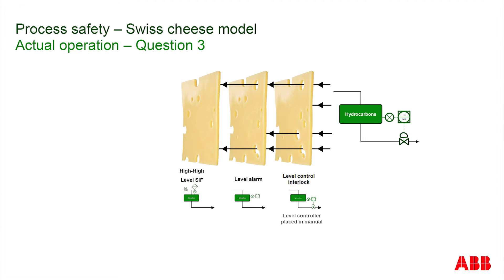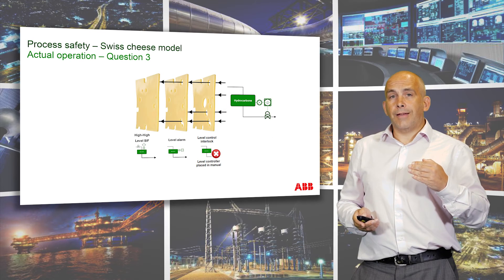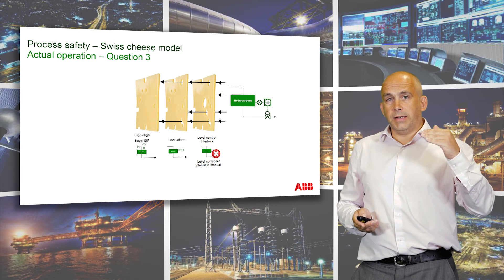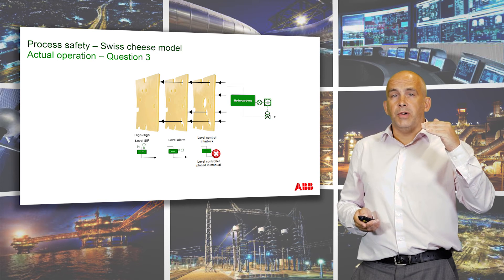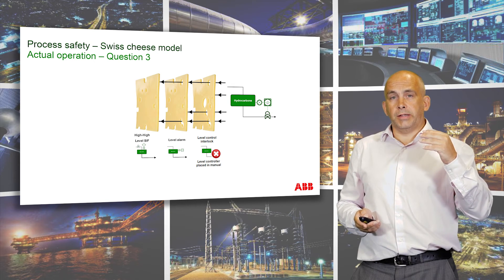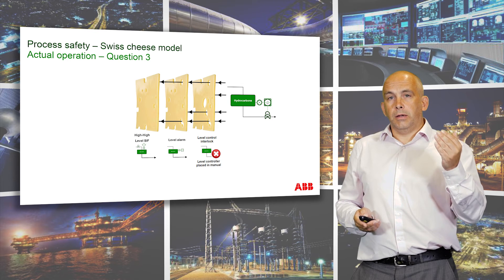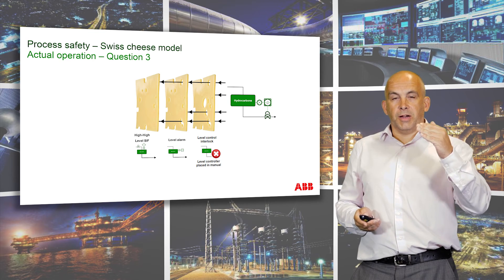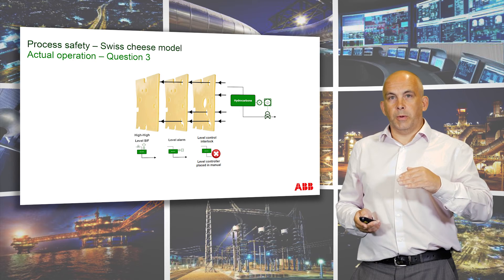As soon as that occurs, we're actually defeating that particular barrier — introducing a new hole in our Swiss cheese analogy. Then, because that controller is in manual, the level isn't controlling very well at all. Let's say now that the level is rising. It hits the alarm threshold, the alarm annunciates, the operator accepts it. Then the level goes back down again, the alarm activates again, and the operator accepts it.